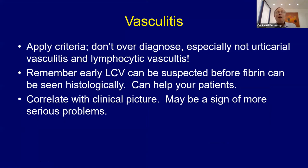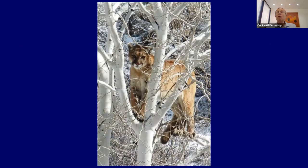In summary: make sure you know your criteria for diagnosing vasculitis, know the way we diagnose these, and know the different blood vessels that can be involved — from lots of inflammation to almost no inflammation to granulomatous inflammation. These can be associated with abnormal circulating proteins and more serious systemic involvement. Know your criteria. And don't overdiagnose lymphocytic vasculitis. I hope you enjoyed the talk.